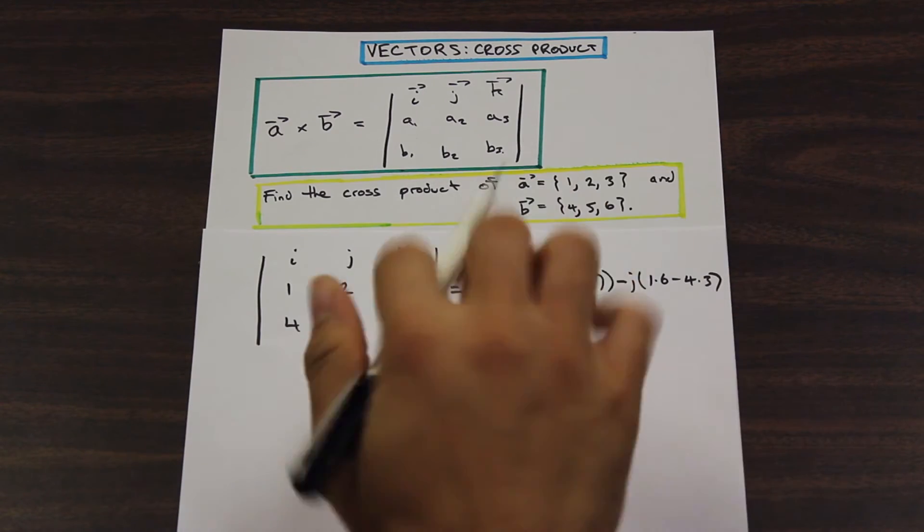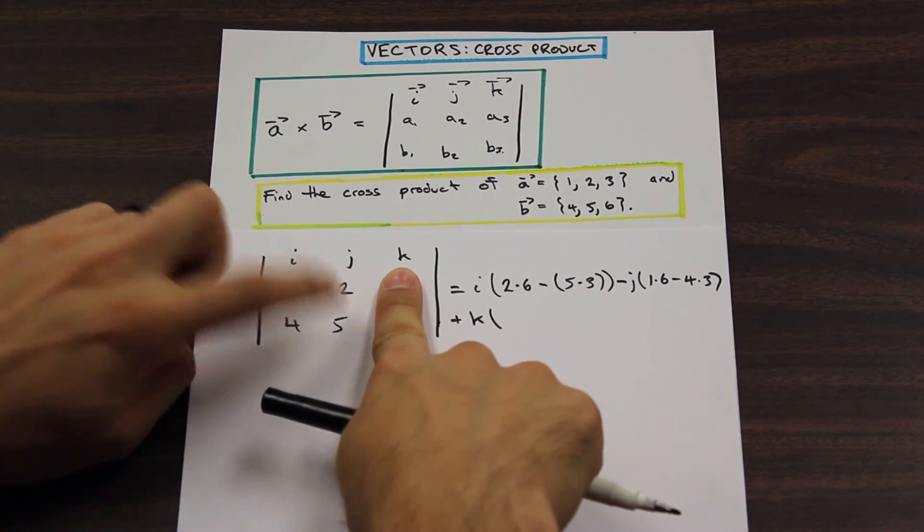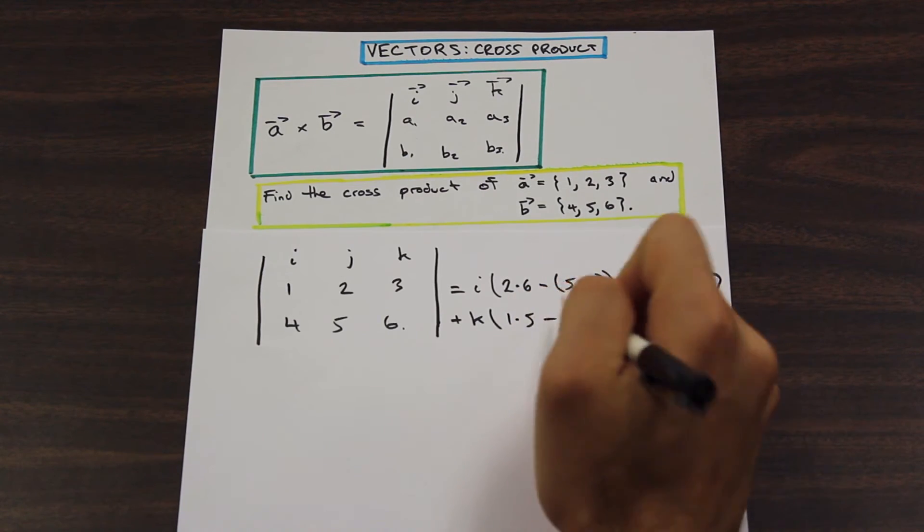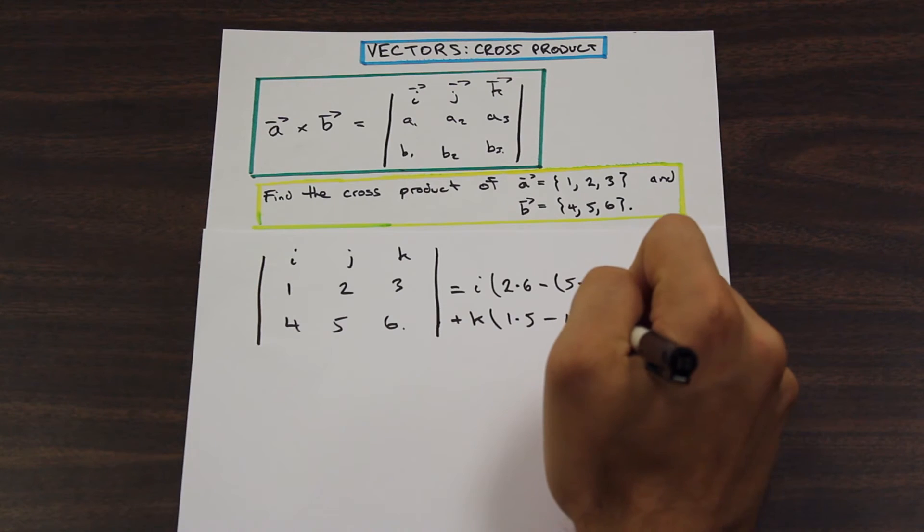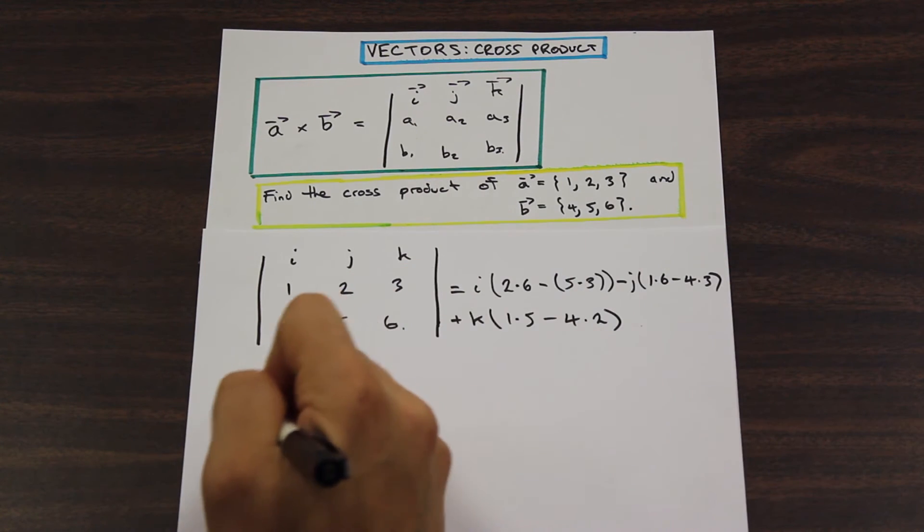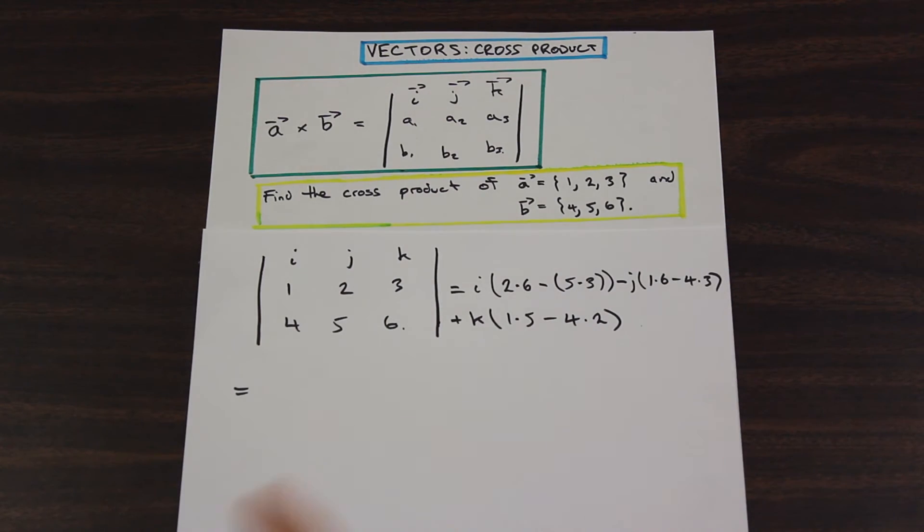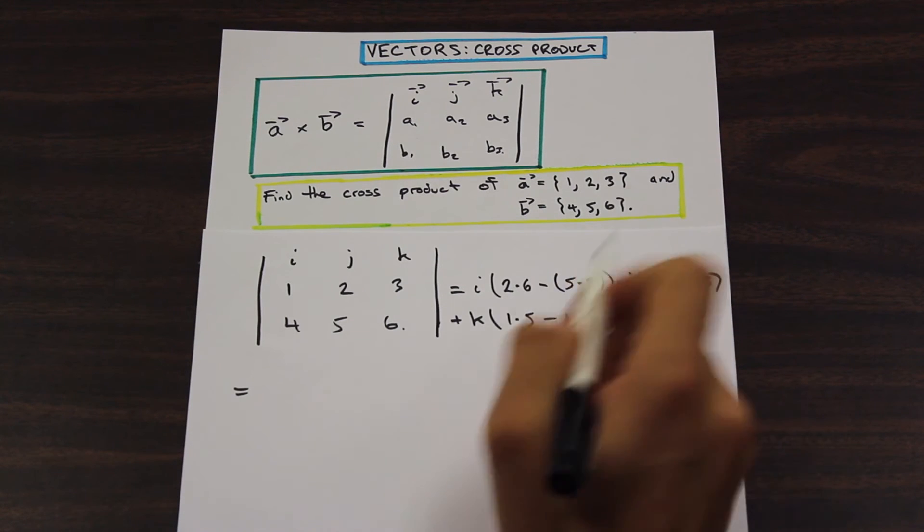I'm going to come down here, and then the third component is going to be a plus, a positive sign. So we have K, eliminate this column here, we have one times five minus four times two. And if we come down here, all we need to do is evaluate inside these brackets here, and we can go ahead and find the cross product of these two vectors.